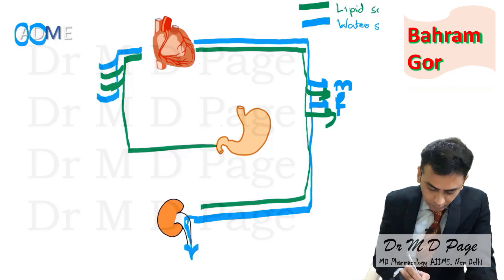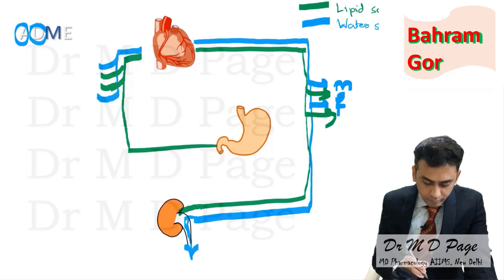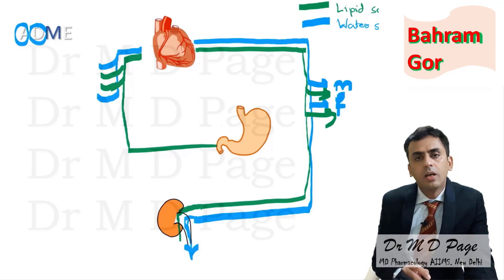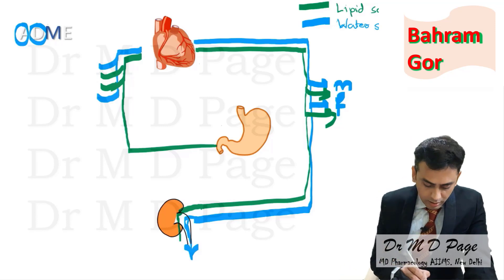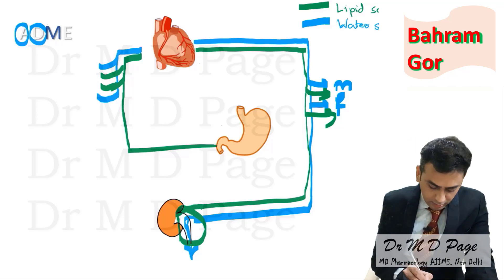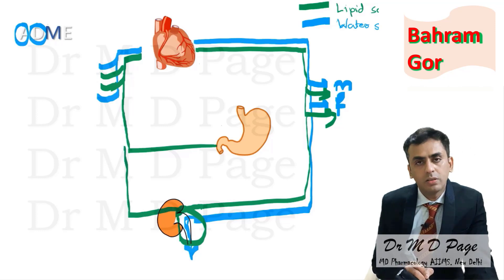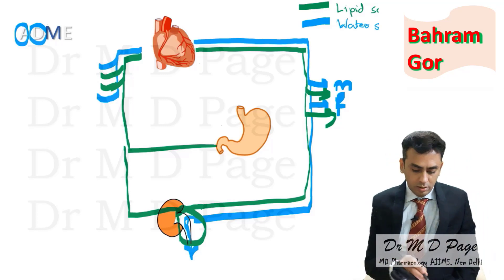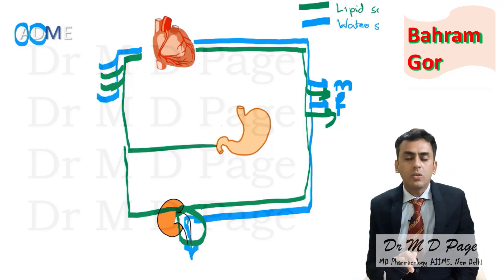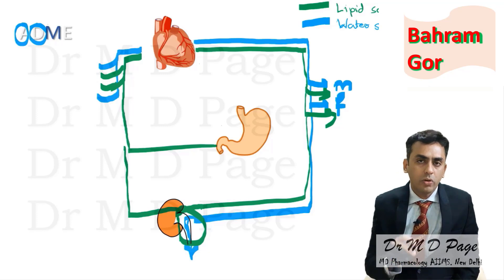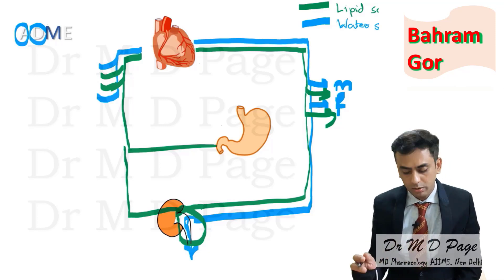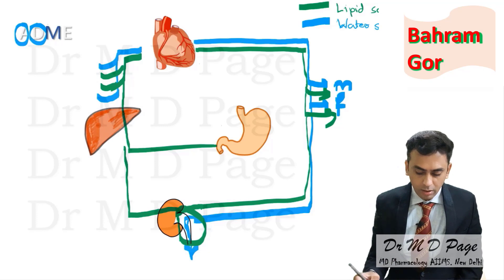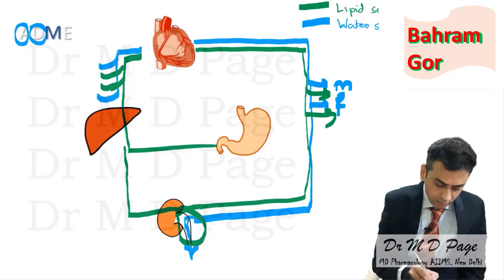Lipid soluble drugs also get filtered through the glomerulus into the renal tubules, but because they are lipid soluble, they get reabsorbed and re-enter systemic circulation. So there is practically no possible way for lipid soluble drugs to get excreted. You need something to convert this lipid soluble drug into a water soluble drug.